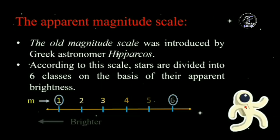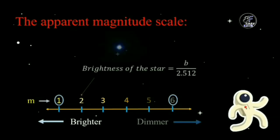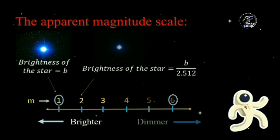So the brighter star is denoted by a smaller magnitude and the fainter star by a higher magnitude. This magnitude scale is not a linear scale — it is a non-linear scale, which means a magnitude 2 star is 2.512 times dimmer than a magnitude 1 star, and at the same time 2.512 times brighter than a magnitude 3 star.